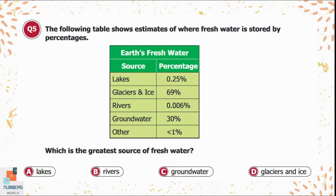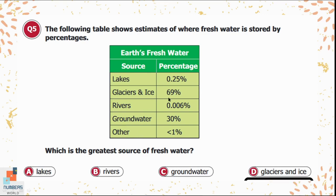Question 5: The following table shows estimates of where fresh water is stored by percentage. What is the greatest source of fresh water? Options: A) lakes, B) rivers, C) groundwater, D) glaciers and ice. Lakes hold 0.25%, rivers 0.006%, groundwater 30%, and glaciers and ice 69%. Option D is the correct answer.